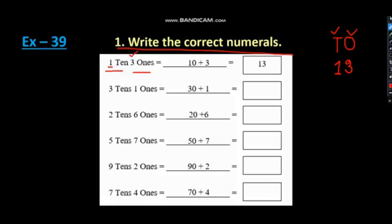1 ten means 10 and 3 ones means 3. So, our answer will be 13. If we add them, our answer will be 13.